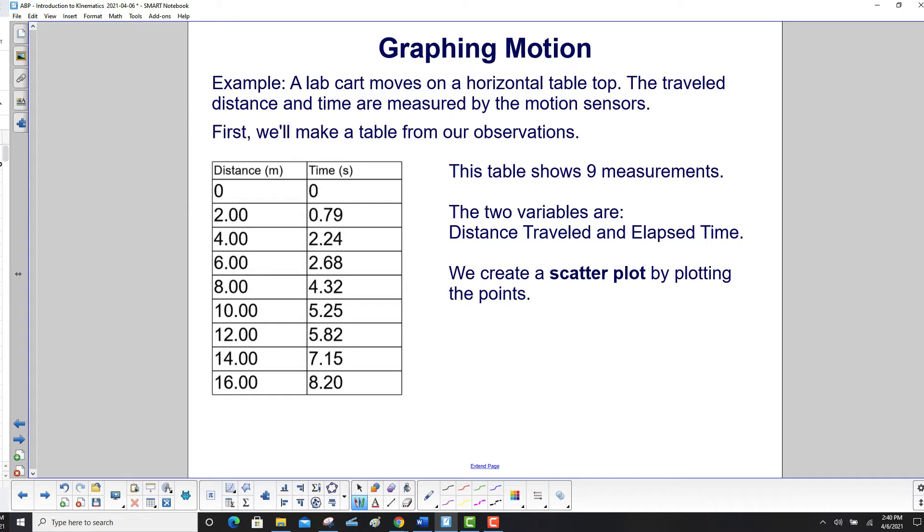Example: a lab cart moves on a horizontal table top. The travel distance and the time are measured by motion sensors. First we'll make a table from our observations. This table shows 9 measurements.